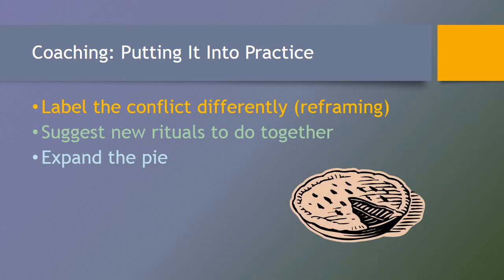Expanding the pie involves reframing from a win-lose situation to a win-win where both sides benefit. For example, a husband and wife are arguing because they wanted to take time off work to spend the holidays together at a nice resort, but the husband has to go on a business trip to Las Vegas over the holidays. At first they see this as win-lose, but rather than seeing the pie as fixed, they expand it so that she can go to Las Vegas with her husband and at least they can spend some time together at a nice resort.